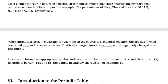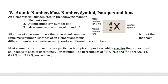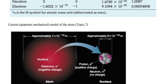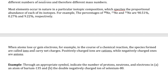Atoms themselves are neutral, but atoms can lose or gain electrons. Why not lose or gain protons? Because protons are really tightly packed with neutrons right in the middle of the atom. Electrons, on the other hand, float around on the outside — some are really far from the nucleus and easy to lose to another atom, and sometimes electrons from another atom can jump onto an existing atom. When that happens, the atom no longer has equal numbers of protons and electrons, so these species are called ions.